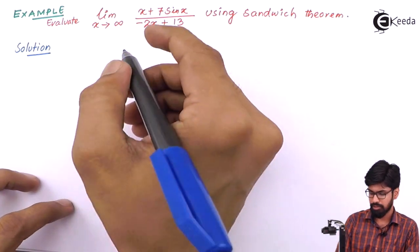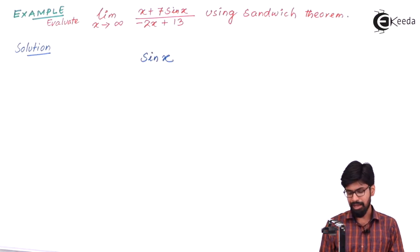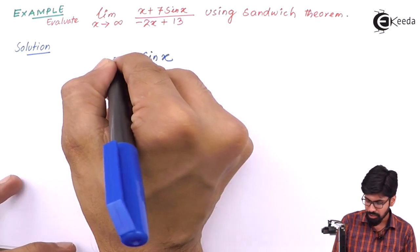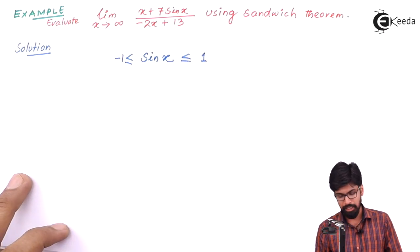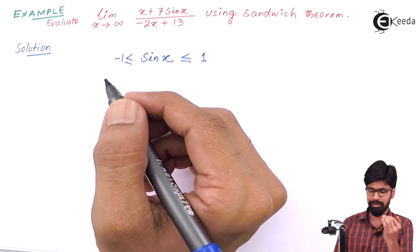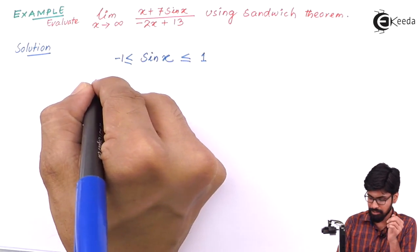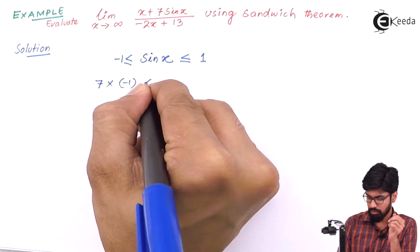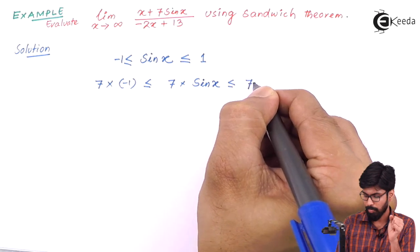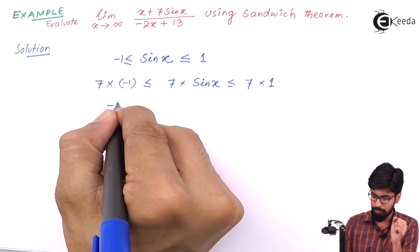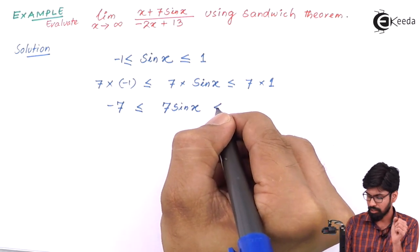First, let us consider sin x. As we all know, sin x has its value between -1 and 1, that is: -1 ≤ sin x ≤ 1. When we multiply a positive scalar to an inequality, the inequality remains the same. So if we multiply 7, this gives us: -7 ≤ 7 sin x ≤ 7.